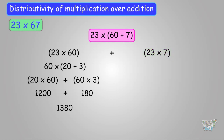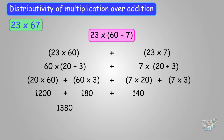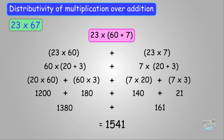On the other side we have to multiply 23 with 7. We will also do this using the property. We write 23 as 20 plus 3, so we multiply 7 with (20 plus 3): 7 times 20 is 140 and 7 times 3 is 21, which equals 161. So 23 times 7 is 161. Now adding the two products: 1380 plus 161 equals 1541. So this is the product of 23 and 67, calculated without using any column method. This was the distributivity of multiplication over addition.